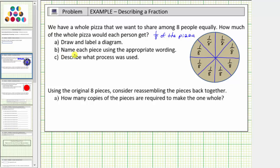We've already drawn and labeled the diagram. We've also named each piece. Let's go ahead and describe what process we used. We cut the pizza into eight equal sized parts. Each part is one-eighth of the pizza.